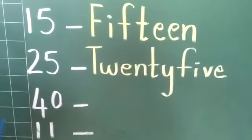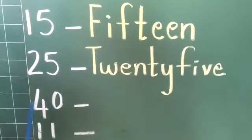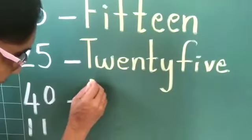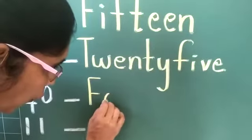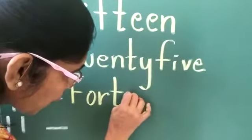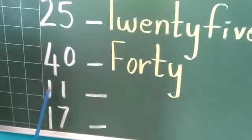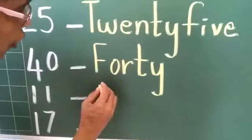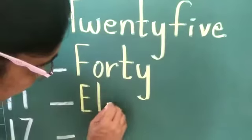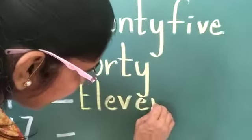The next one is 40. You have already learnt 40 in your class — very confusing, isn't it? The spelling of 40 is F, O, R, T, Y — 40. This is 11: 1, 1 — 11. You are going to write the spelling of 11 here. E, L, E, V, E, N — 11.